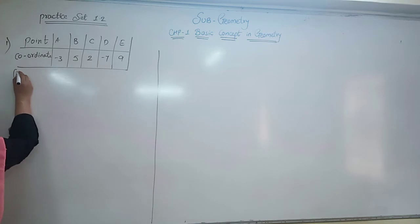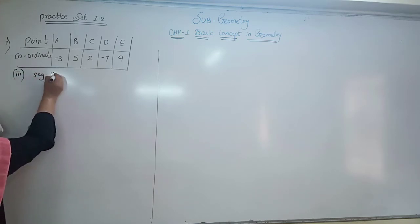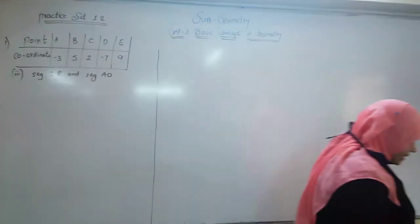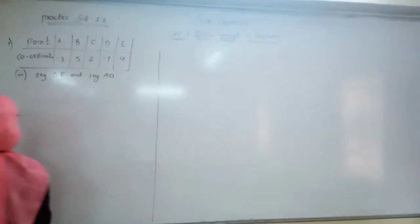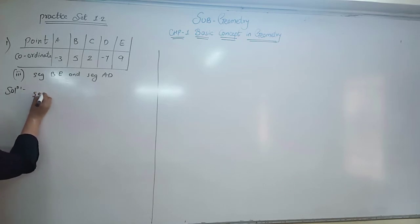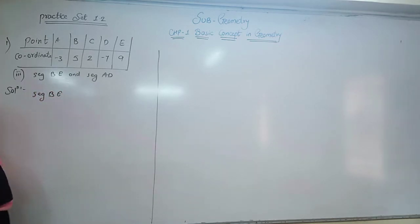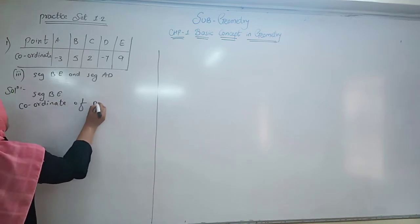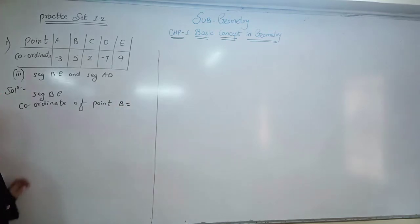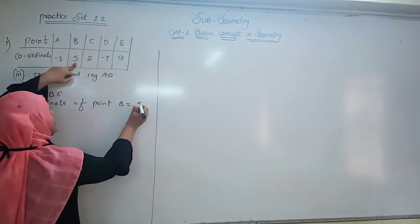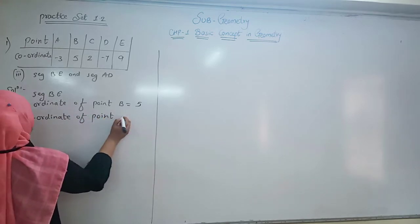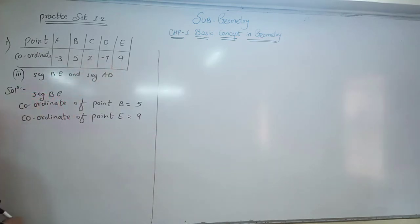Now I am going to do the third question: Segment BE and Segment AD. Same pattern of writing — Solution. Now I am going to work on Segment BE. What is the coordinate of point B? The coordinate of point B is 5. And the coordinate of point E is 9.